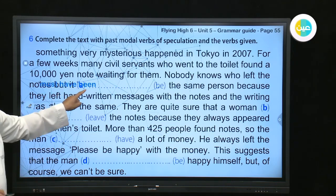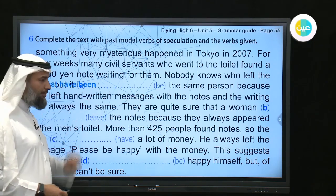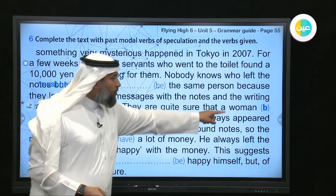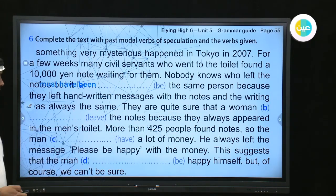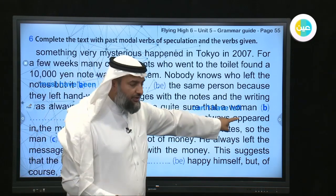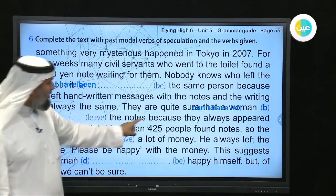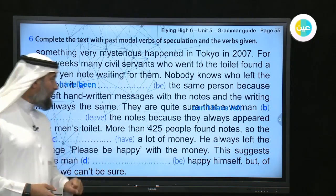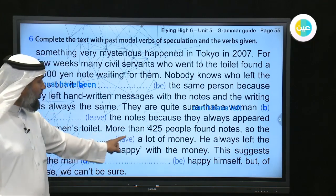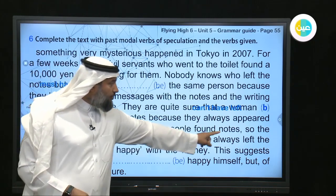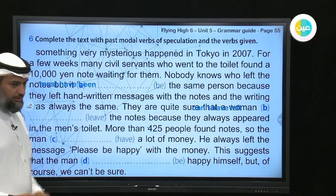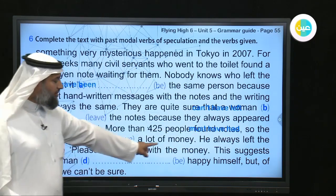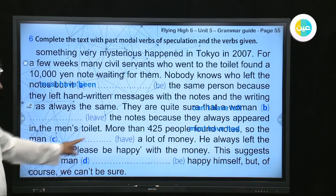Item 1: Because the writing was always the same, it 'must have been' the same person. Item 2: They are quite sure a woman didn't leave the notes because they always appeared in the men's toilet only — so a woman 'couldn't have left' or 'can't have left' these notes. Item 3: More than 425 people found notes, so the man 'must have had' a lot of money.